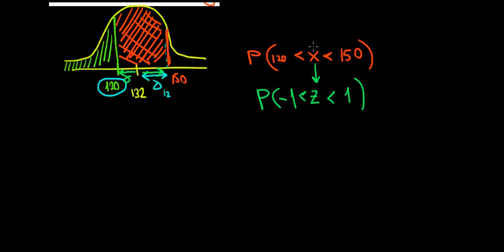By standardizing the X into the z value. So if we standardize, we will have the proportion of the z statistic, which are going to be between the following values. We standardize 120 by calculating how much it differs from the mean of 132 in terms of standard deviations, in terms of 12 units of standard deviation.